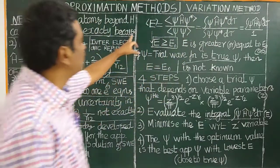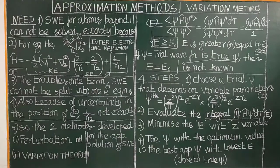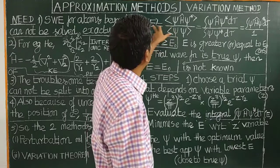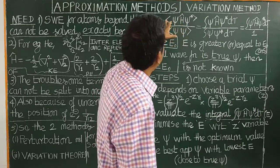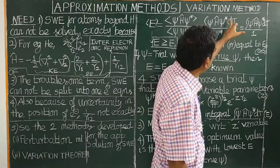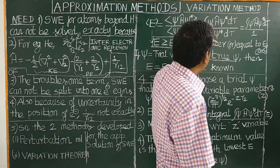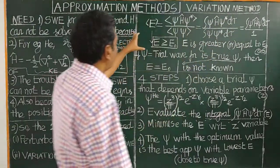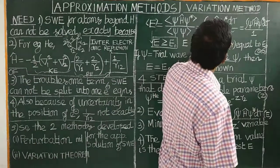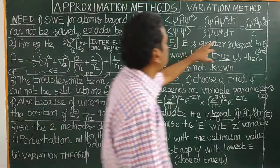According to the expectation value theorem — the average value of energy — the average value of energy is given by an integral expression using bracket notation. In this expression, psi is the wave function, psi-star is the complex conjugate of the wave function, and H-hat is the Hamiltonian operator.